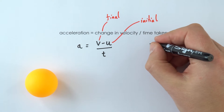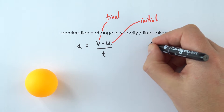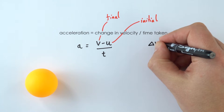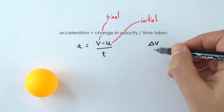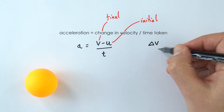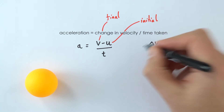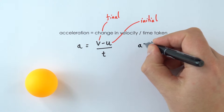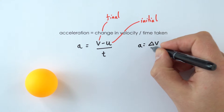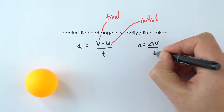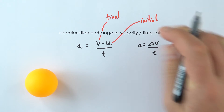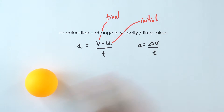Sometimes we also represent this as delta V — delta just means change. So we can also say that A is equal to delta V divided by T. But basically this is the equation we're using.